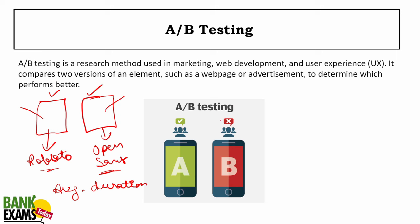Sometimes we change the color of the UX — we do two versions of the website: one is green, the second one is red or blue. And then we find out which one performs better, which one has a better user experience. AB testing is a method used in marketing, web development, and user experience. It compares two versions of an element to determine which one performs better.